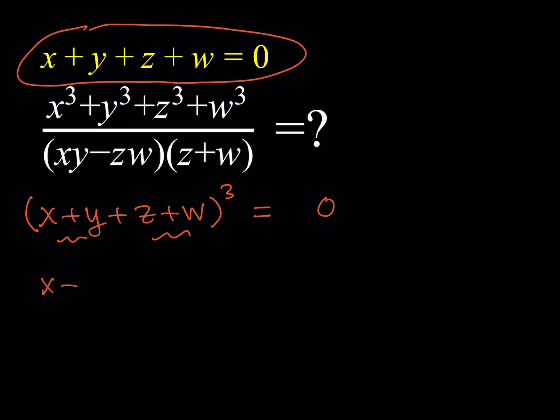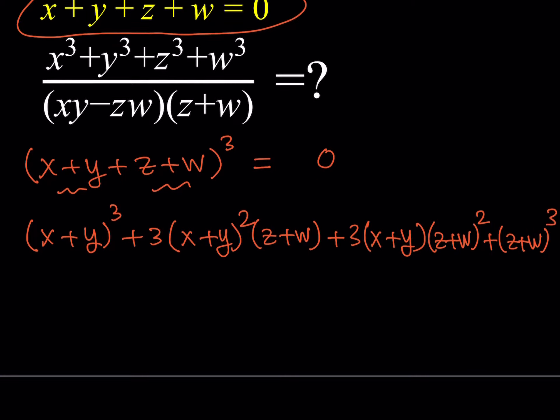I'm going to first cube the first term, which is x plus y. So x plus y cubed plus the second term comes with a 3, and the power of x plus y goes down. That's the binomial theorem. The other term increases in power while the other one decreases. So this sum is also equal to 0.